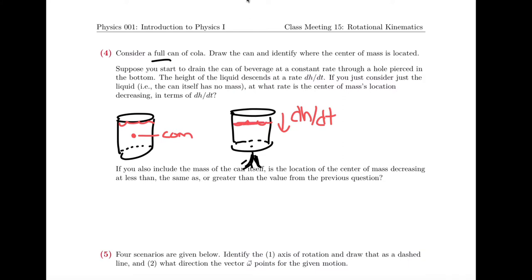The height of the top of the water is dropping. By symmetry, the center of mass is always in the center between the bottom of the can and the top of the liquid. If the height is reducing at rate dh/dt, and the center of mass is always in the center, it must be descending at a rate of one-half dh/dt. If it's descending half as fast, it's always in the center between the bottom and the top. As the height of liquid descends to zero, they all ultimately converge on one another.